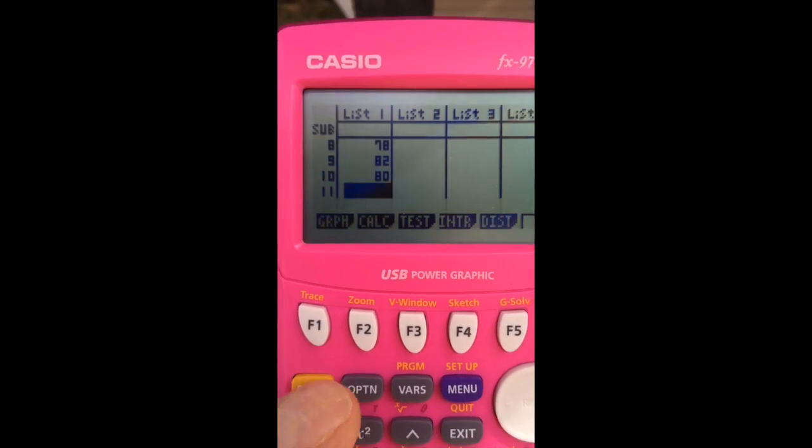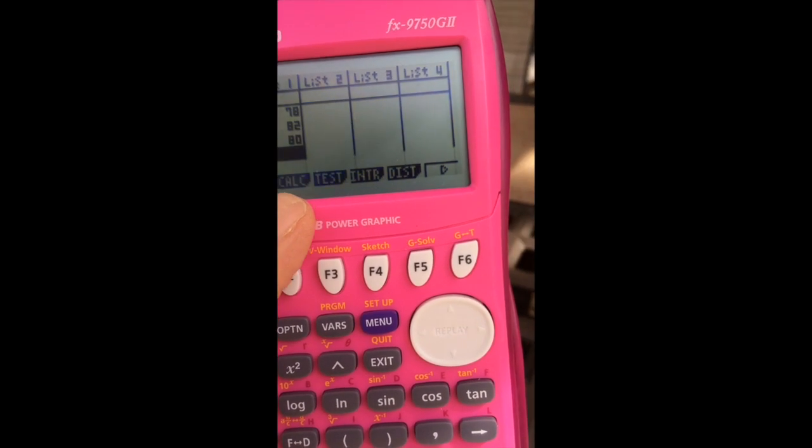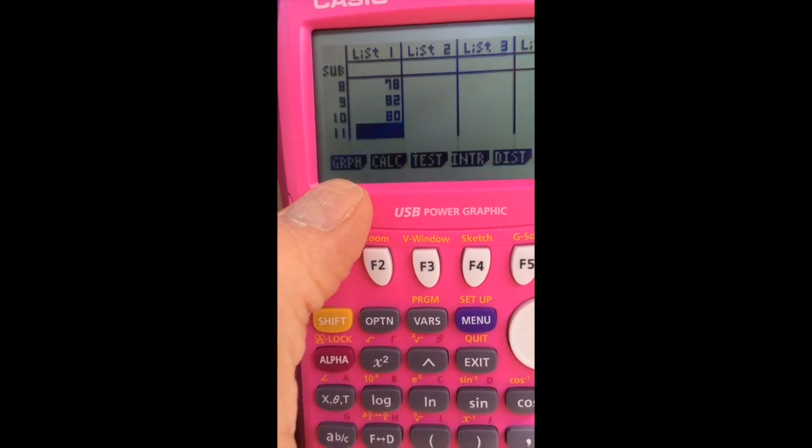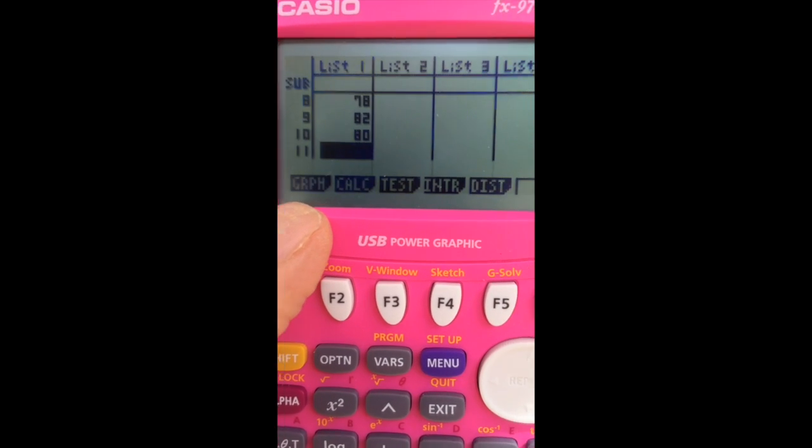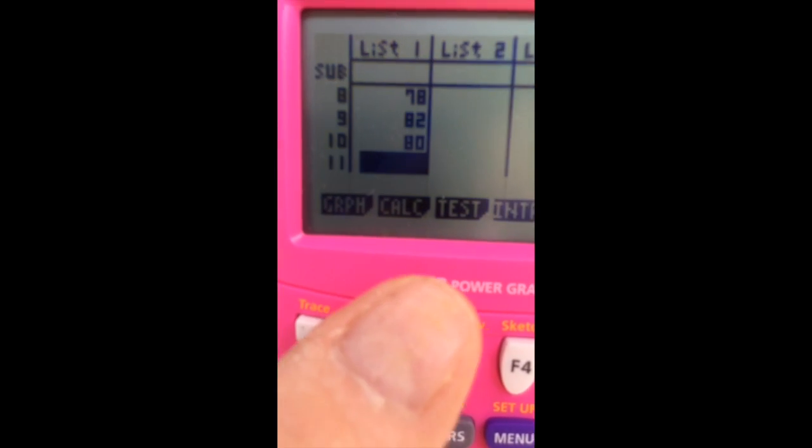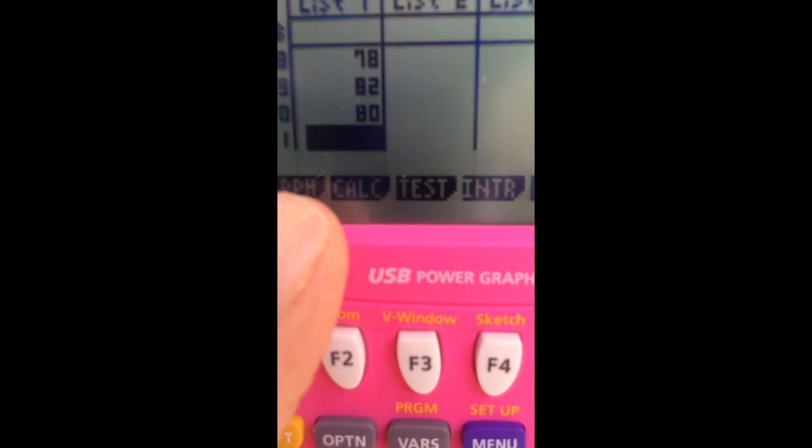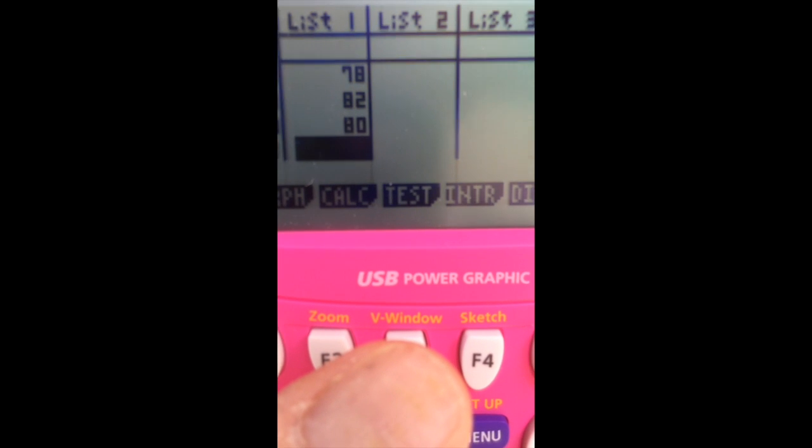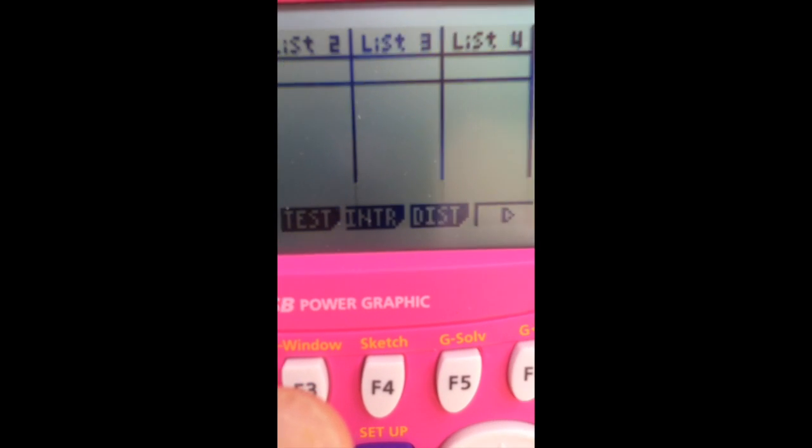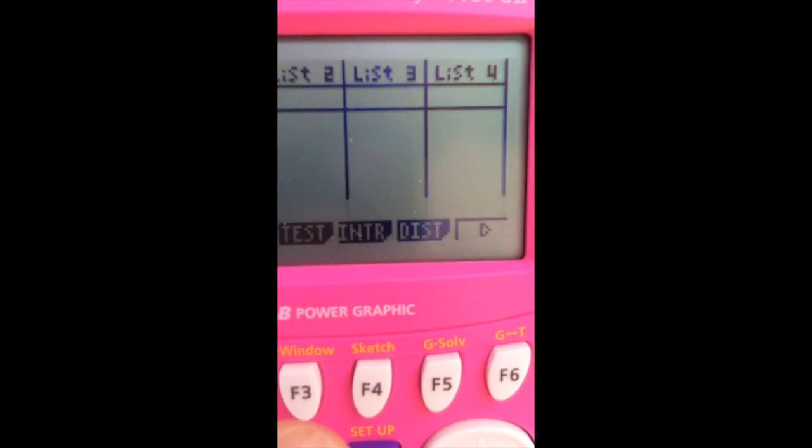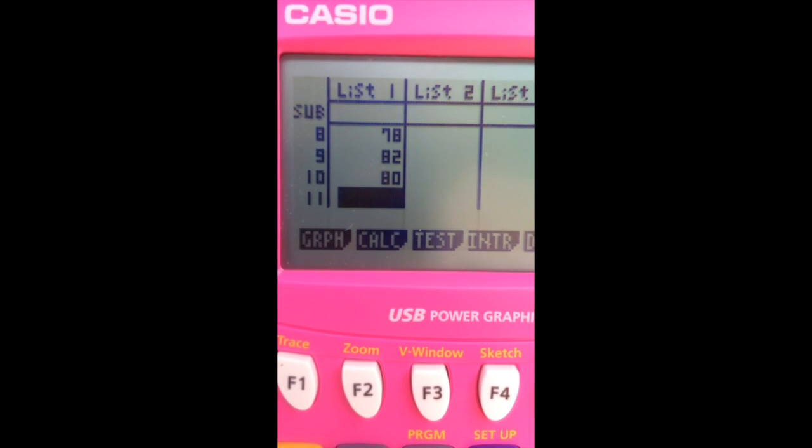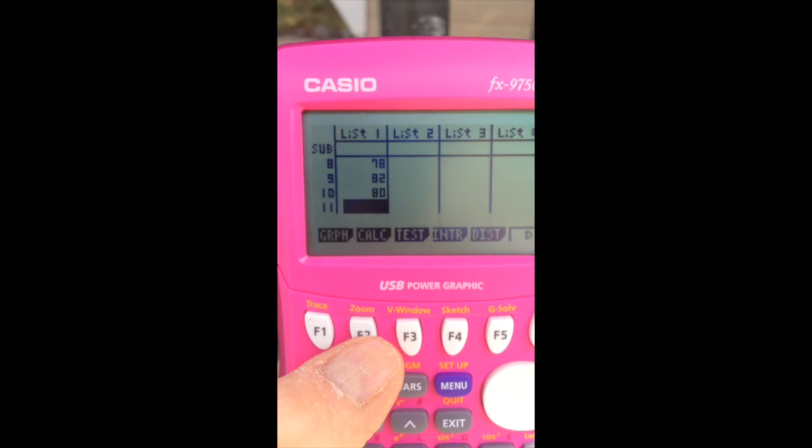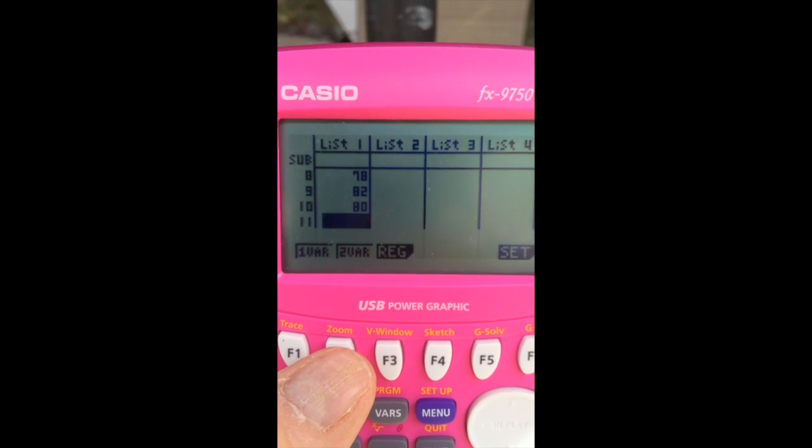Now, to do that, if you look underneath the graph, you see these options underneath the chart here. And this one, let's see if I can zoom in here for you. It says Graph, and then Calculate, and Test, and there are more options. The one we want to use is Calculate. So, we're going to hit this F2, and it brings up that menu.